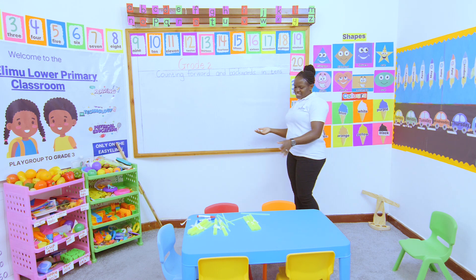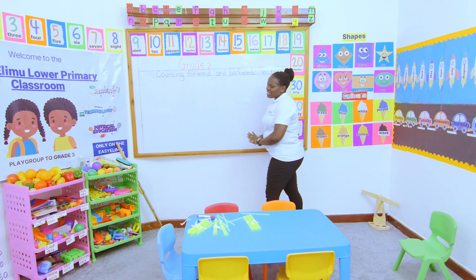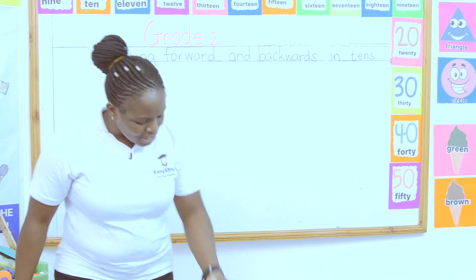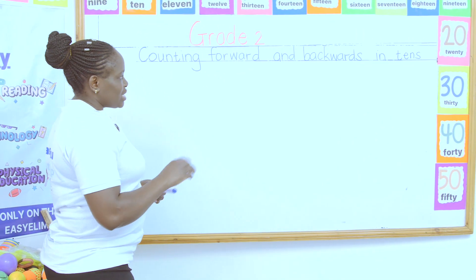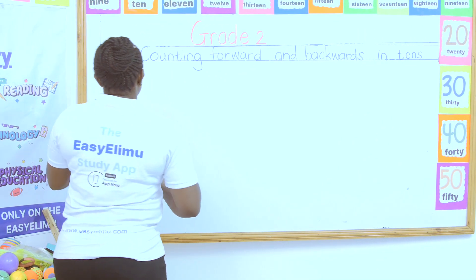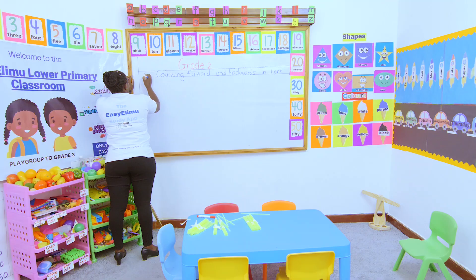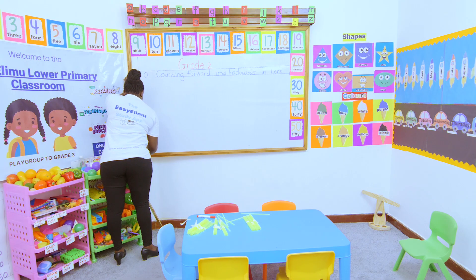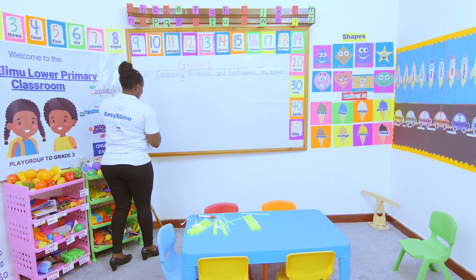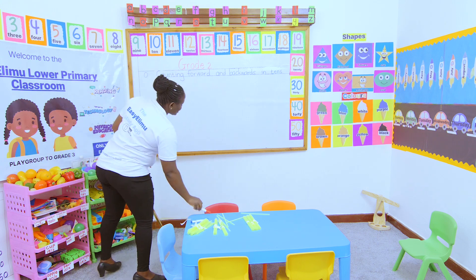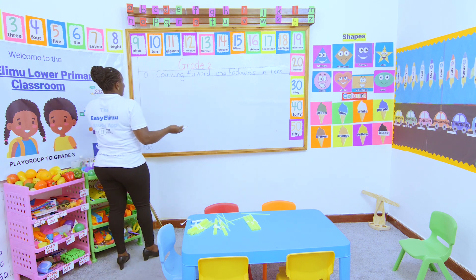What are tens? Tens are numbers that end with zero — one zero. The numbers between zero and 100. These are the numbers we call tens, and of course those numbers must end with zeros.